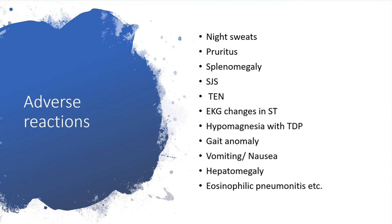Without defibrillation, ventricular fibrillation could progress to asystole. Without advanced cardiac life support and code blue being called, asystole could lead to the end of life for the affected individual. Additionally, gait abnormality is present. Anyone on pentamidine could experience vomiting or nausea. Hepatomegaly has been identified in some patients. Eosinophilic pneumonitis could also occur, and the list goes on.